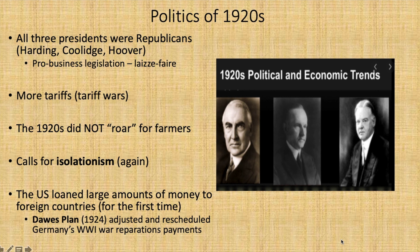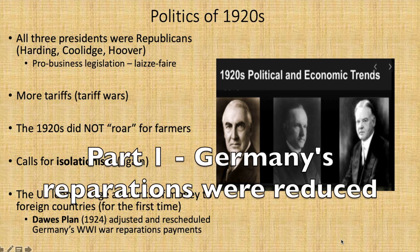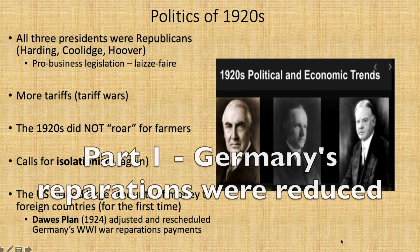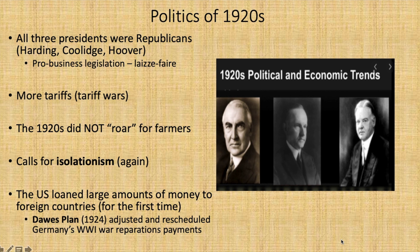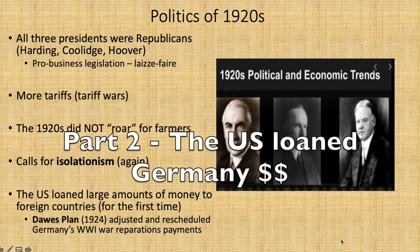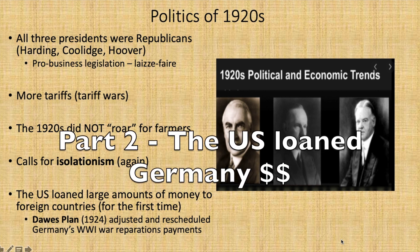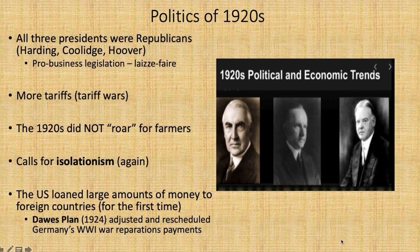Part one: reparations were reduced in the short term to 50 million pounds per year. Part two: the United States gave loans of $25 billion to Germany to help rebuild its industrial capacity, which would make it easier for Germany to generate the tax revenue needed to meet reparations. The United States loaning all of this money out created quite a liability when the economy around the world would basically collapse due to the Great Depression.